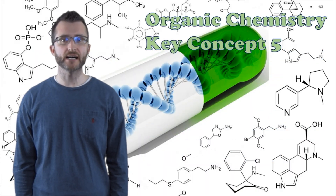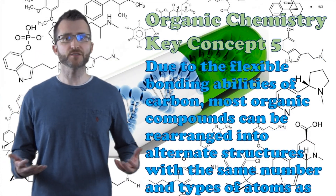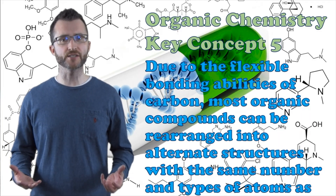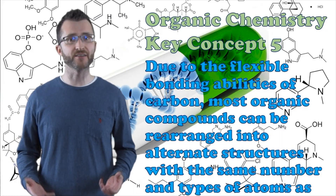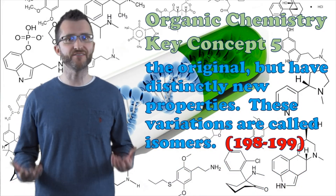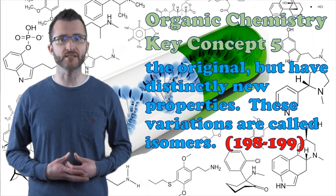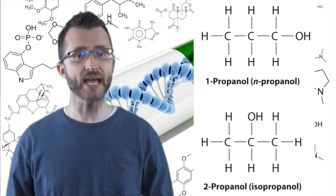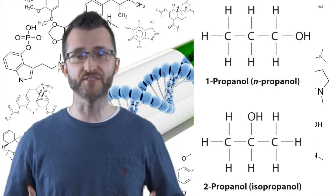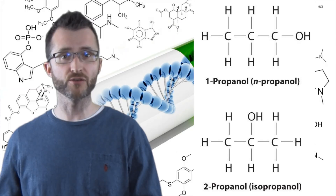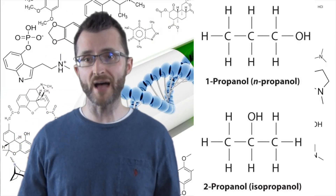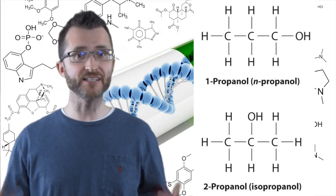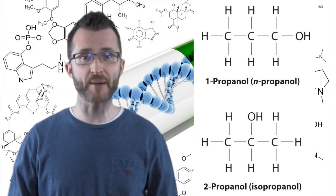Organic chemistry key concept five. Due to the flexible bonding abilities of carbon, most organic compounds can be rearranged into alternate structures with the same number and types of atoms as the original, but have distinctly new properties. These variations are called isomers. In our first example, we have two structures. They have the same number of C's, H's, and O's. They're both alcohols as well. However, we've moved the position of that OH group, and in doing so, we've created a new set of properties.